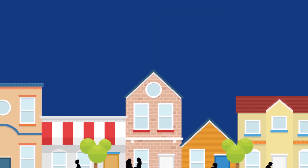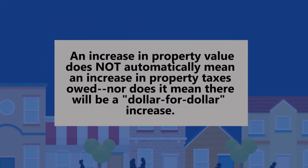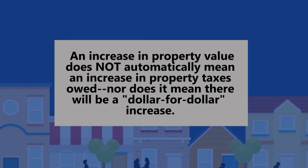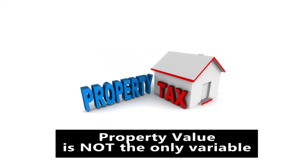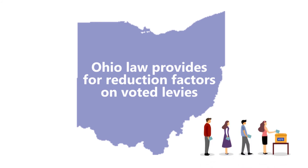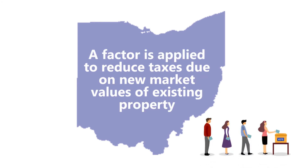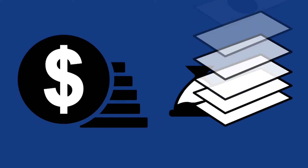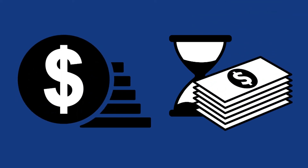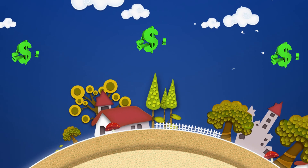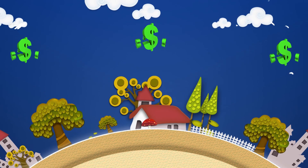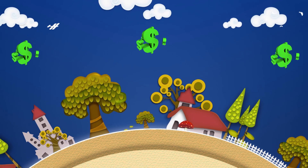It's important to keep in mind that an increase in property value does not automatically mean an increase in property taxes owed, nor does it mean there will be a dollar-for-dollar increase. While property value is part of the formula, it is not the only variable. For example, Ohio law provides for reduction factors for voted levies, meaning a factor is applied to reduce taxes due on new market values of existing property so that the entity receives the same revenue as the prior year. However, communities do see increases in tax revenue through new construction, emergency levies or taxes to repay debt, and voters approving a property tax increase or a new levy.